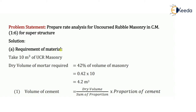The first step is to calculate the required material. As I mention in every video on rate analysis, whenever the unit of measurement is in meter cube, you have to assume 10 meter cube of work because there are standard numbers of labors available for 10 meter cube of work. If the unit of measurement is in meter square, for example for plaster, you assume 100 meter square. So I will be assuming for UCR masonry 10 meter cube of work.